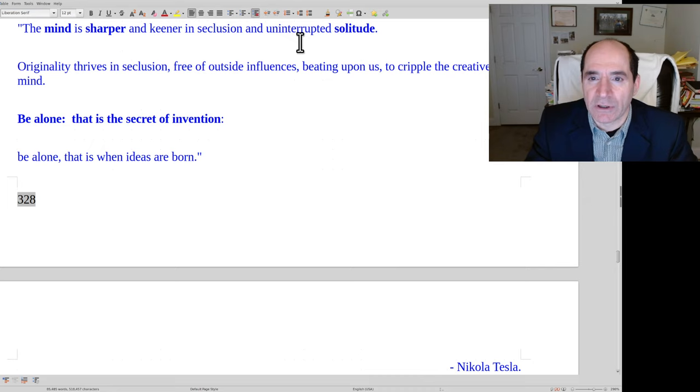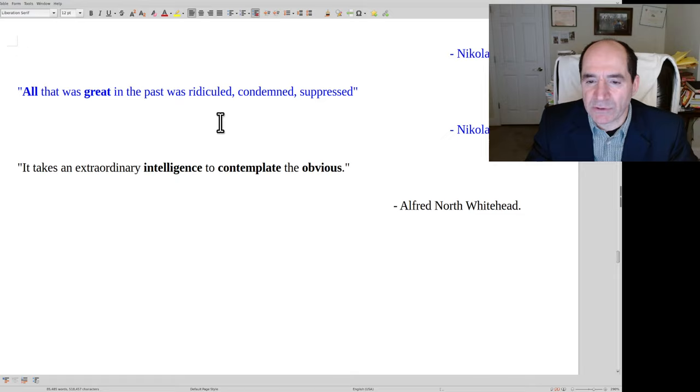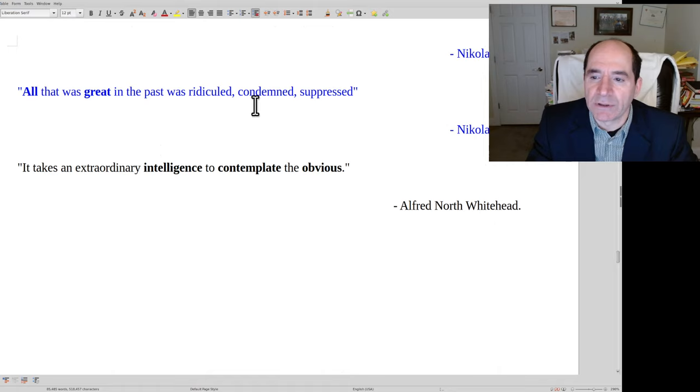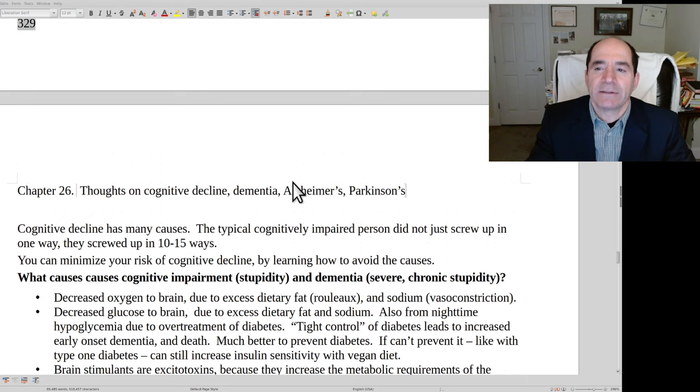Going on here. Next one is a quote from Nikola Tesla, another great genius inventor: the mind is sharper and keener in seclusion and uninterrupted solitude. Originality thrives in seclusion, free of outside influences beating upon us to cripple the creative mind. Be alone, be alone. That is the secret of invention. Be alone, that is where ideas are born. There's a lot of truth in that. If you want to do top-notch thinking, you got to get away. That's like where Newton did his best work in 1665, the miracle year, when he's escaping from the plague. He just spent time in Woolsthorpe and did all his thinking and did incredible things. Nikola Tesla: all that was great in the past was ridiculed, condemned, suppressed. Alfred North Whitehead: it takes extraordinary intelligence to contemplate the obvious. Those are just some quotes to go over some of the nuance of advanced thinking.